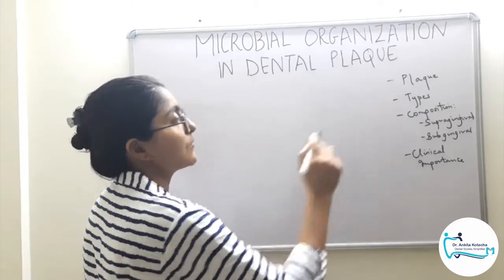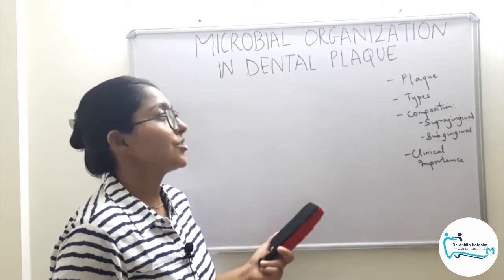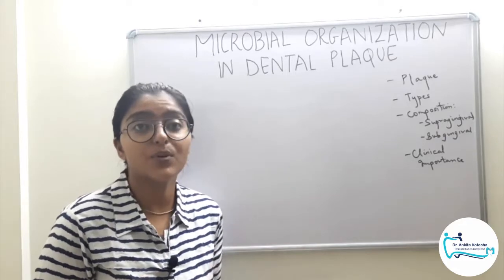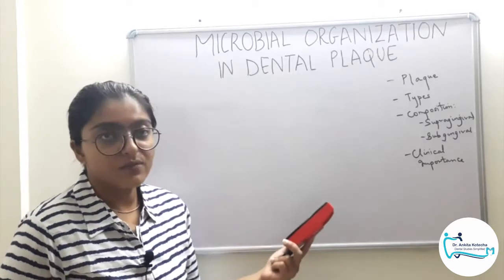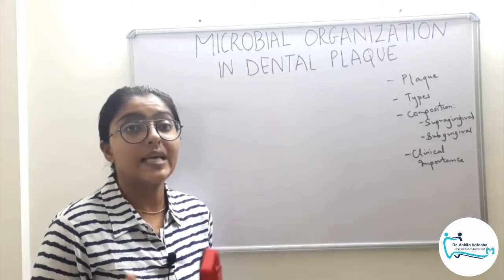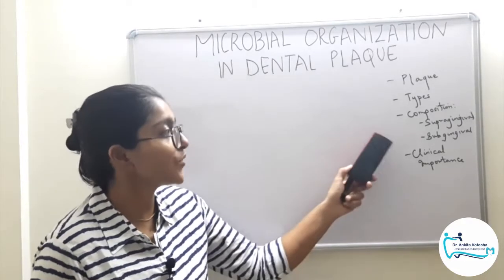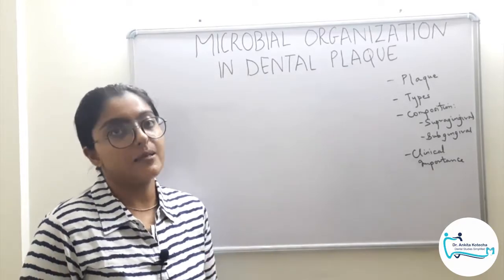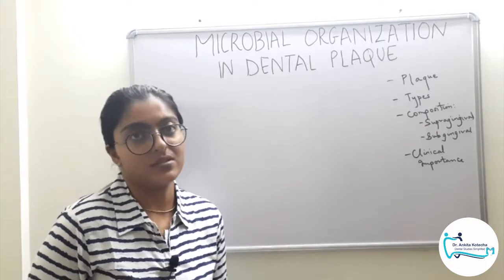This topic will be dealt under the following subheadings: a brief discussion on the statistics, that is the number of microorganisms in dental plaque; a brief discussion on the types of dental plaque; followed by a detailed discussion on the microbial composition, that is a stratified organization of the microorganisms in supragingival plaque, followed by subgingival plaque. I will end the discussion with clinical importance.